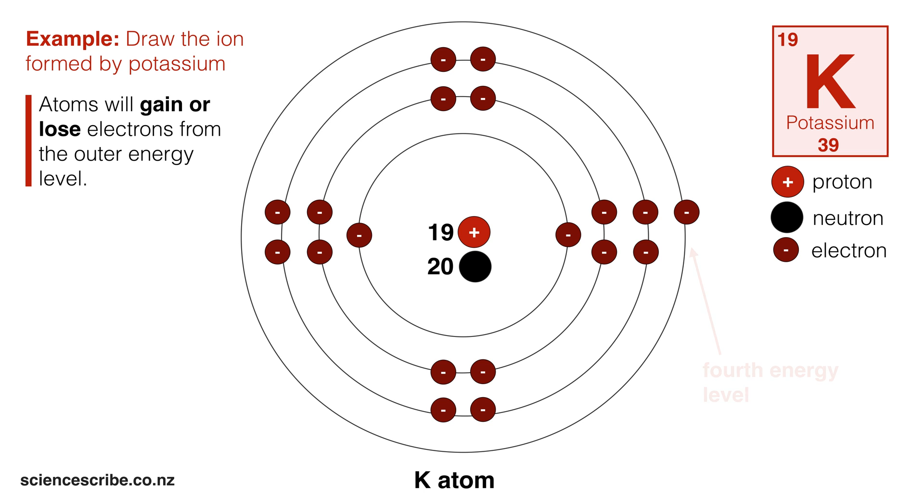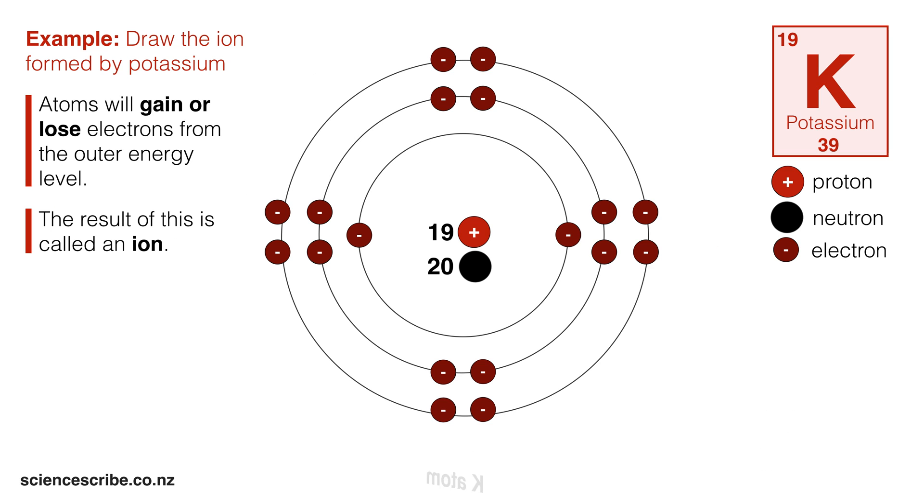And in this case, my outer energy level is the fourth energy level, and you can see that I've only got one electron on the outside, so it's going to be a lot easier to lose one electron than it is to gain a whole lot. Remember that the result of gaining or losing electrons is also going to be called an ion. So instead of the potassium atom, I now have a K plus potassium ion.